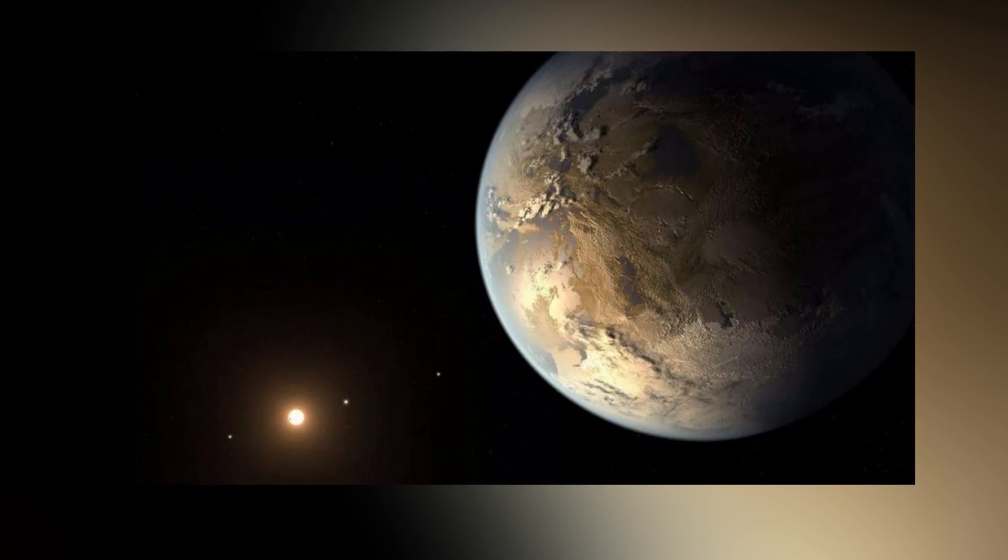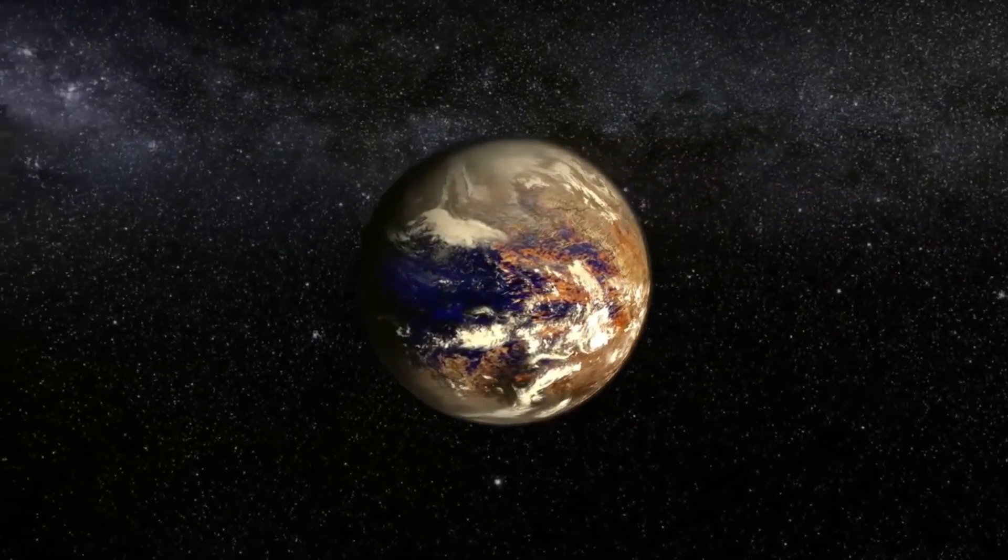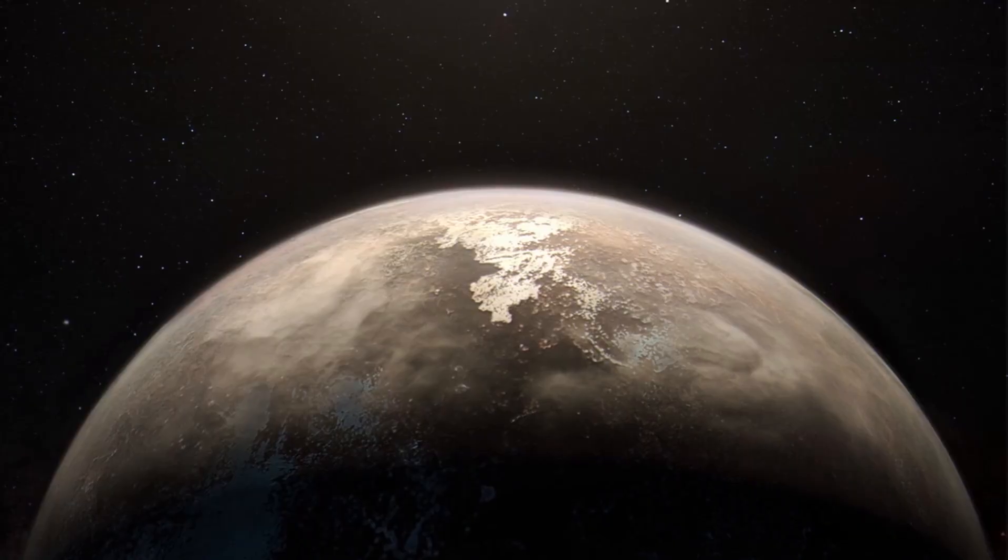Scientists are not yet clear whether Proxima b has an atmosphere, but if it does, the ingredients such as carbon dioxide, rocks, and water necessary for the formation of the biochemical cycles we call life will be present on its surface.